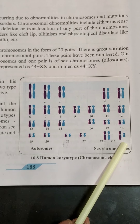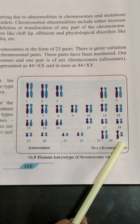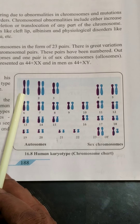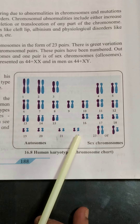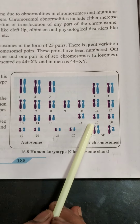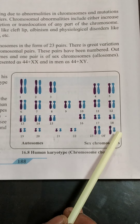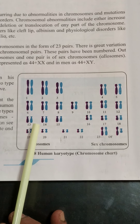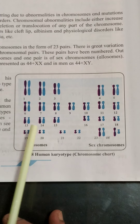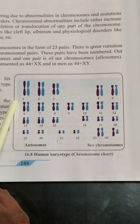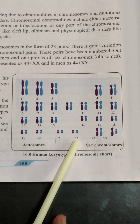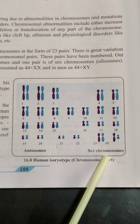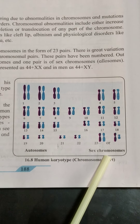The answer to the first question is that chromosomes are arranged from 1 to 22 according to their length, and the 23rd pair is the sex chromosome. The classification according to number is also clear: pairs 1 to 22 are called autosomes, and the 23rd pair is called the sex chromosome.